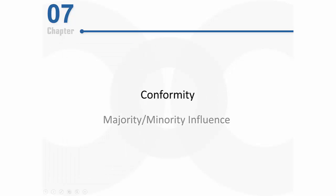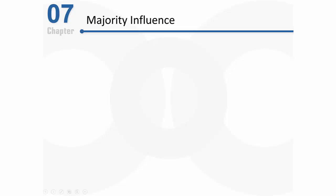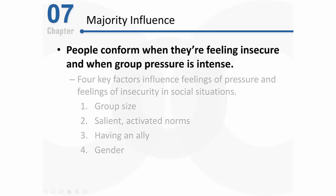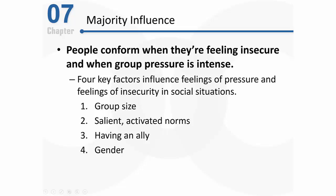Welcome back everybody. Let's continue to talk about conformity — this time focusing on majority influence and also minority influence. Let's begin by talking about some factors that affect a majority's influence. We've learned that people can conform when they're feeling insecure and when they sense that group pressure is intense. There are four key factors that influence those feelings of pressure and insecurity in social situations: the size of the group, whether the norms involved are salient, whether a person has an ally, and gender.